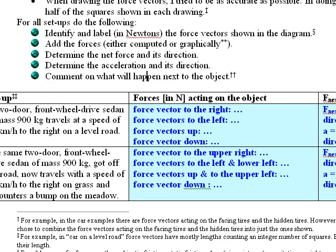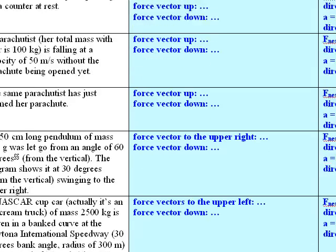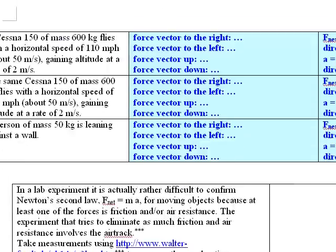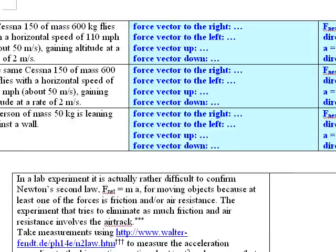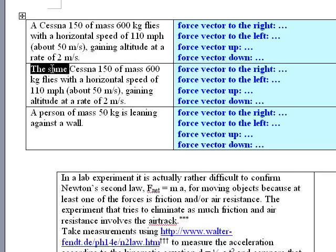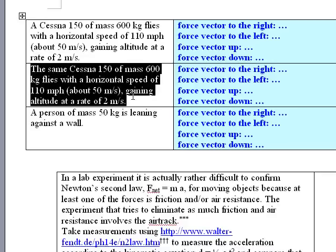So we're going to look at a couple of setups and I will go through these that I just mentioned. So here's the one that I want to cover: the same Cessna 150 of mass 600 kilograms flies with a horizontal speed of 110 miles per hour, about 50 meters per second, gaining altitude at a rate of 2 meters per second.